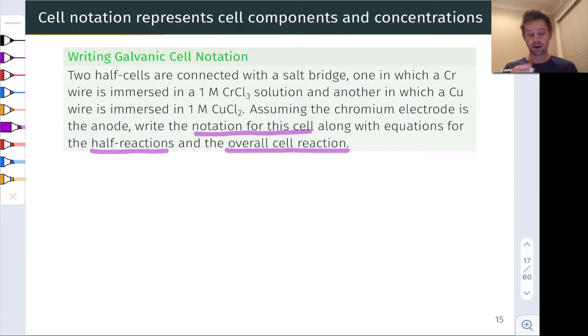So we're going to be drawing on our skills in writing half reactions and balancing redox reactions to do this, in addition to interpreting the text and writing some cell notation. So we've got a Cr or chromium wire immersed in a CrCl3 solution.